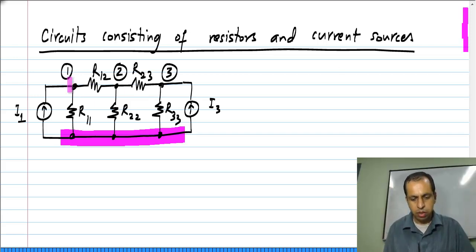At every node, I write the sum of currents going out of the node to be equal to the incoming current from the independent sources.